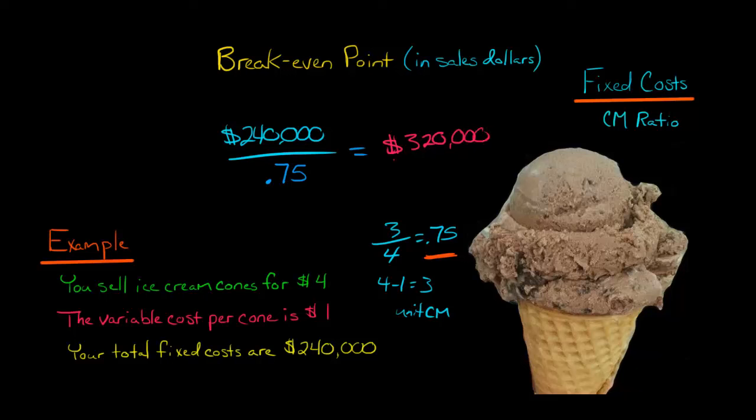Okay, so this is the amount of sales revenue that we need to hit. We need to do $320,000 in sales in order to break even. So if we were to do $300,000 in sales, we are going to lose money. We're going to have a loss.